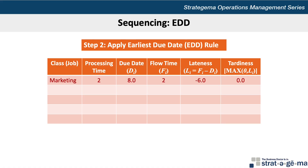The marketing assignment, which takes 2 hours to complete and is due at 8 hours past midnight, would be the first one in sequence under the EDD rule. The flow time is 2, the lateness is 2 minus 8, or negative 6, and the tardiness is 0, since 0 is greater than negative 6. This tells us that if Mike completed the marketing assignment first, it would be completed 6 hours early.